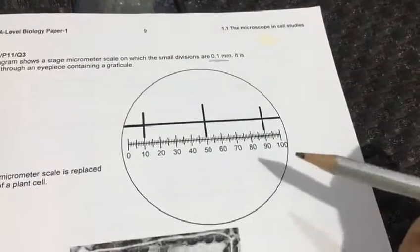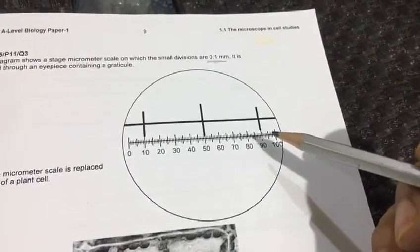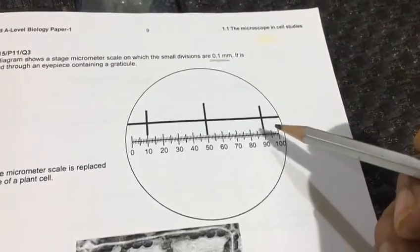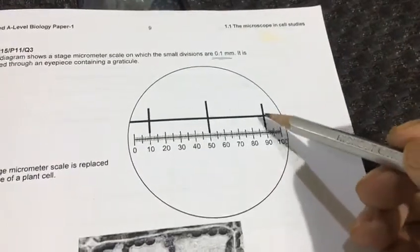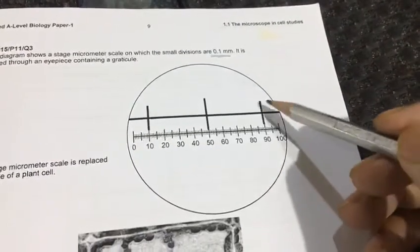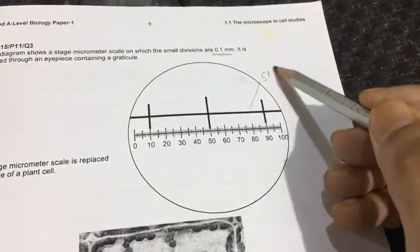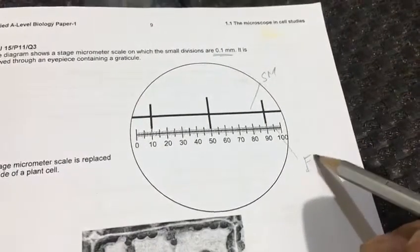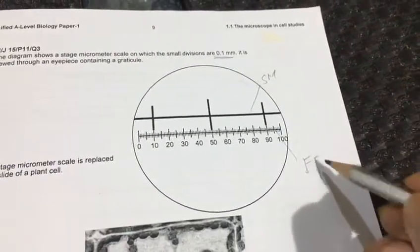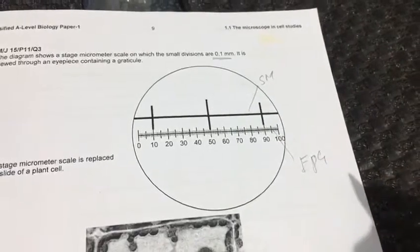So when you view the microscope through your eyepiece, you view both of the scales parallel together. This one is an SM, stage micrometer, and this one is an eyepiece graticule, EPG.